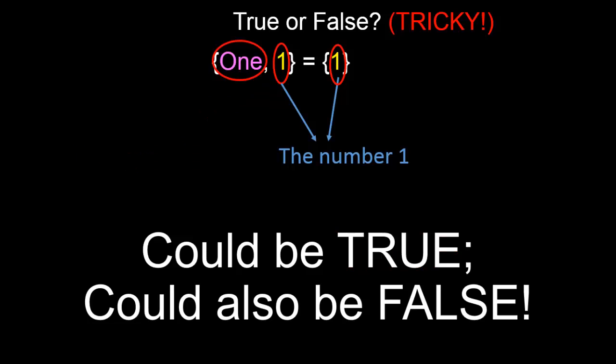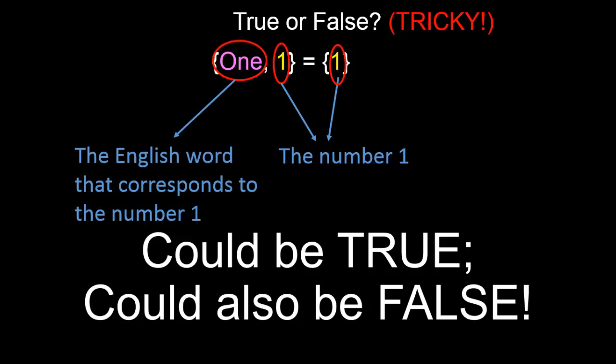On the other hand, if the pink element is simply a symbolic representation for the English word that corresponds to the number one, then the two sets are not in fact the same thing. This is because the set on the left contains an English word, but the set on the right does not contain an English word.